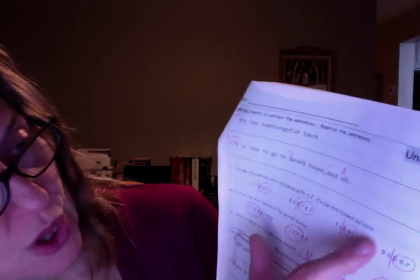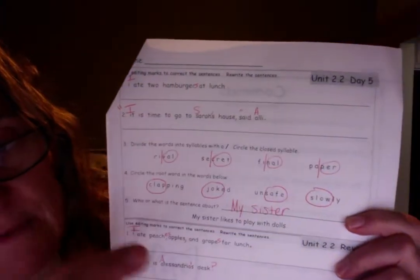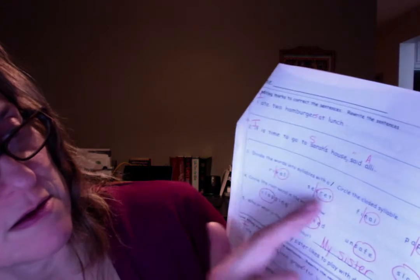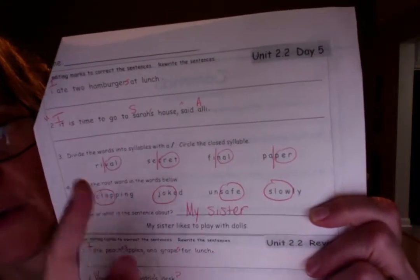But also we're supposed to circle the closed syllable, meaning it's consonant, vowel, consonant, has a consonant on each side closing the vowel in. So we should have circled V-A-L, C-R-E-T, N-A-L, P-E-R. Those are consonant vowel consonants.